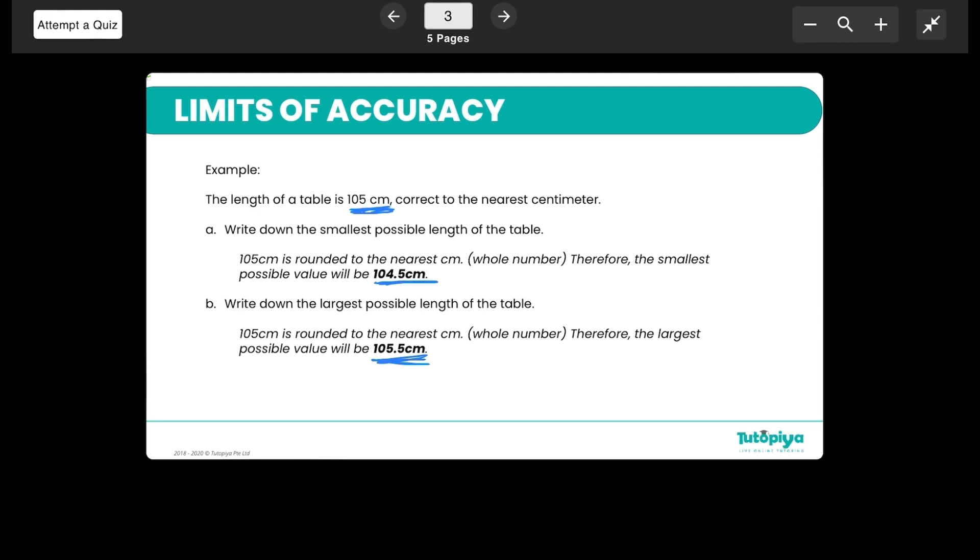Now if you look at the possibilities, it could have been 104.5, because this would have rounded up to 105 centimeters to the nearest centimeter. Or it can be something as big as 105.49999, which we could have rounded down to get 105 centimeters.